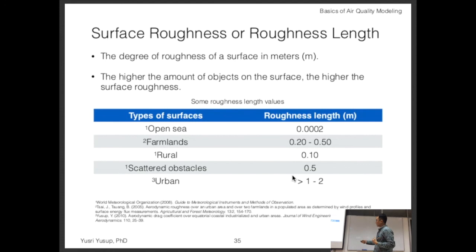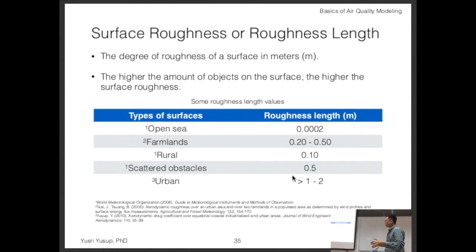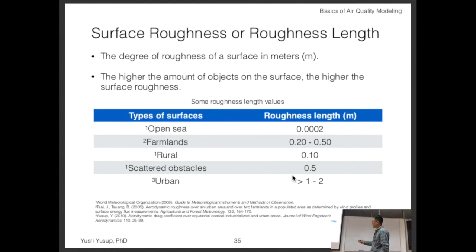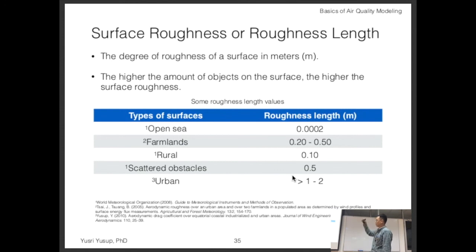Rural areas with some trees and houses have a roughness length of about 0.1 meters. Scattered objects give about 0.5 meters. Urban areas are 1 to 2 meters, the same as tropical rainforest or dense forest, because of the significant obstruction on the surface.